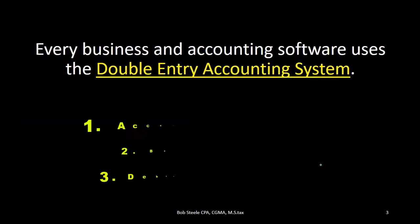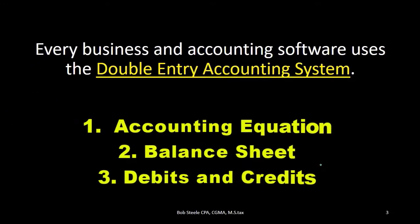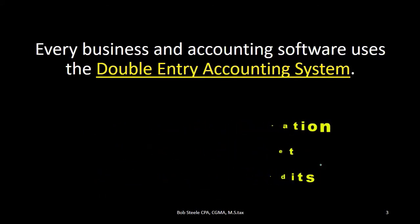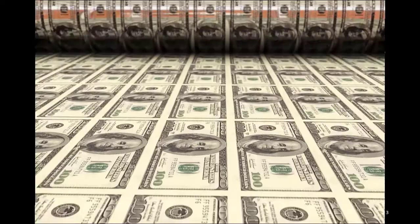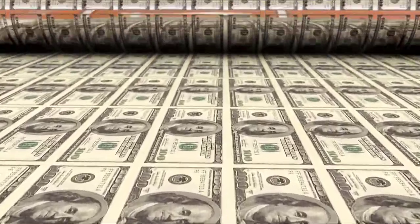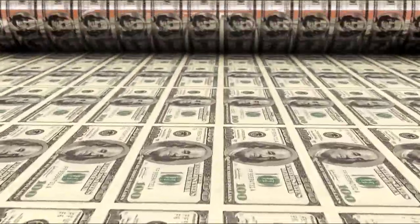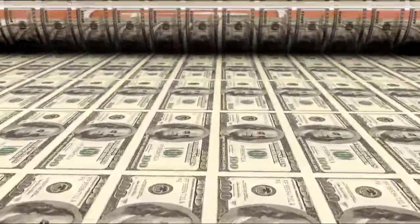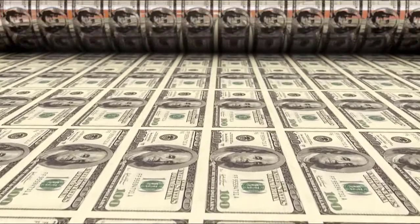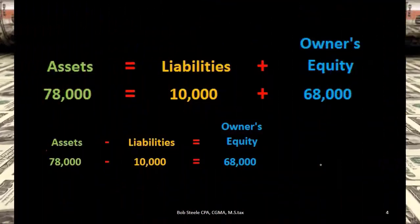One: the accounting equation. Two: in terms of the balance sheet being in balance. And three: in terms of total debits and credits. As we look at the financial statement, we are in essence looking at that double entry accounting system in the format of the accounting equation.